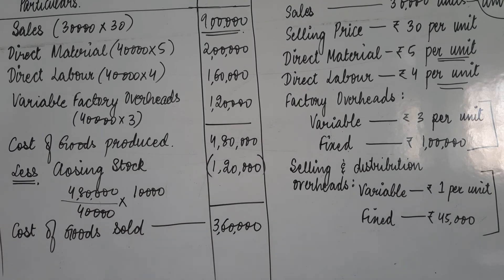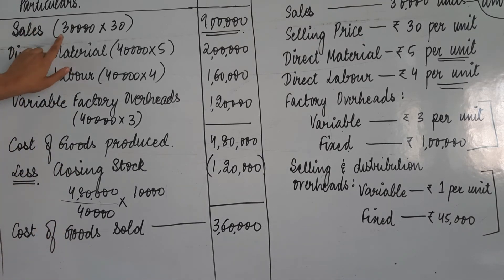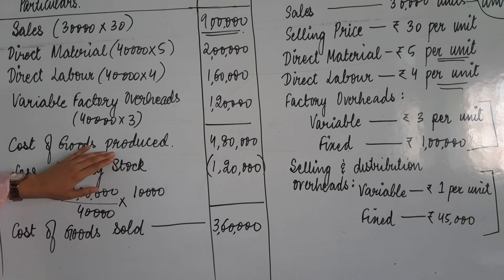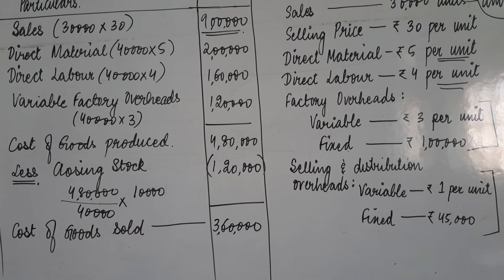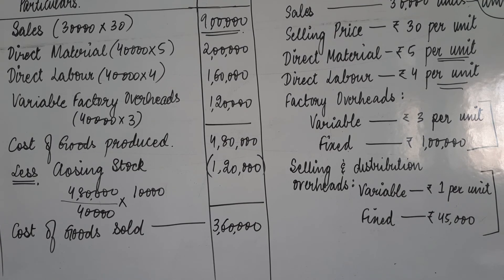Now clarifying: humne cost of production ke liye 40,000 liya tha because material, labor, and factory overheads are all production-related. Sales ki value humne starting mein likhi thi — us value ko hum tabhi use karenge jab total variable cost aa jaaye. We have cost of goods sold as ₹3,60,000, which represents 30,000 units.